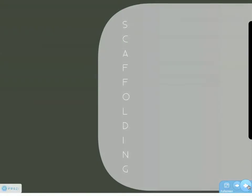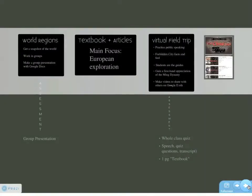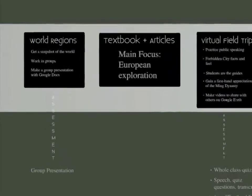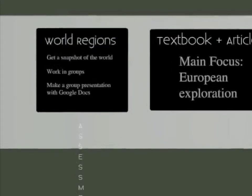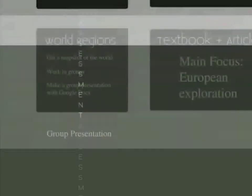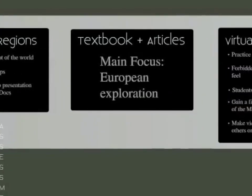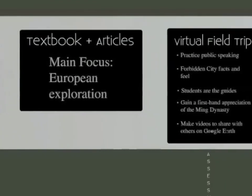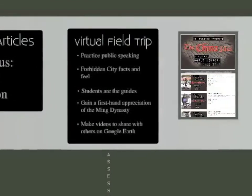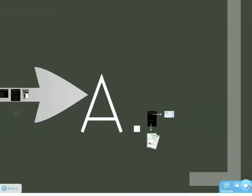In order for them to answer this question, they needed to have facts to draw on. My task was to scaffold the information for them. The first thing was to jigsaw the world — what was happening at the time? They did collaborative group presentations and got a general understanding of what was happening from the 1500s to the 1750s. Then we studied the textbook, which has a very Eurocentric perspective. And the last part was the virtual field trip, as a counterbalance to the textbook. With all this information, they were finally ready to answer the question of which region in the world was really driving change at the time.